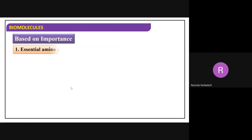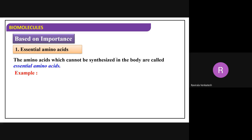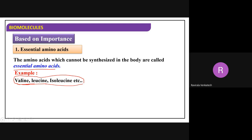Let's see one more classification: based on their importance - essential amino acids and non-essential amino acids. Essential amino acids are those that cannot be synthesized in the body, so we have to take them in food. Examples: valine, leucine, isoleucine. These will be present in tonics - when you are not feeling well or suffering from fever, the doctor prescribes a tonic because these cannot be synthesized in the body.